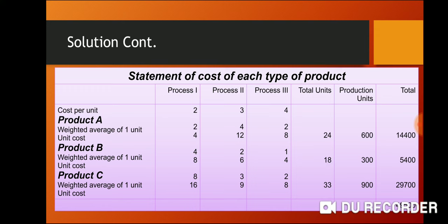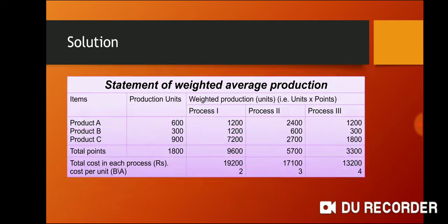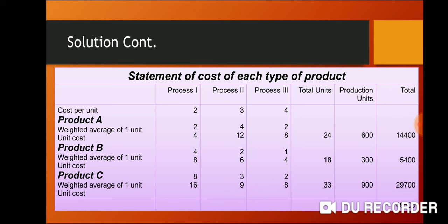Weighted Average of 1 Unit of Product A is 2, 4, 2. This is the problem we have to do. Product B is 4, 2, 1. Product C is 8, 3, 2. Cost per process: Product A weighted average unit cost — Process 1 is 12, Process 2 is 12, Process 3 is 8 — total unit cost is 24. Number of production is 600, so total cost is $14,400.